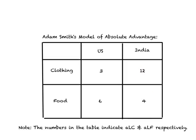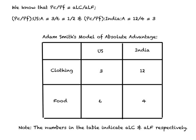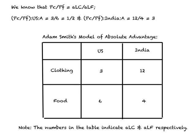Let us look at this table again. We have established that the US has an absolute advantage in production of clothing over India, and India has an absolute advantage in production of food over the US. Now let us look at the direction of foreign trade in terms of the formal structure developed in the previous video, using relative price ratios. We know that PC/PF equals ALC divided by ALF, where ALC is the amount of labor required to produce one unit of clothing and ALF is the amount of labor required to produce one unit of food. What is the relative price of clothing in the US in autarky?